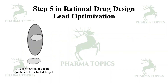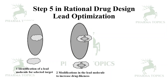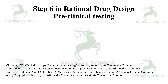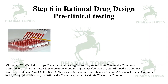Step five involves identifying the lead molecule for the selected target and modifying it — that is, optimizing the lead to increase its drug-likeness. The optimized lead molecule can then be taken for further stages of drug discovery, including preclinical testing.